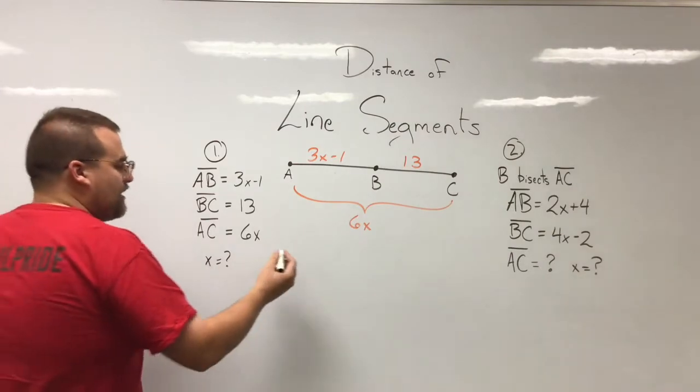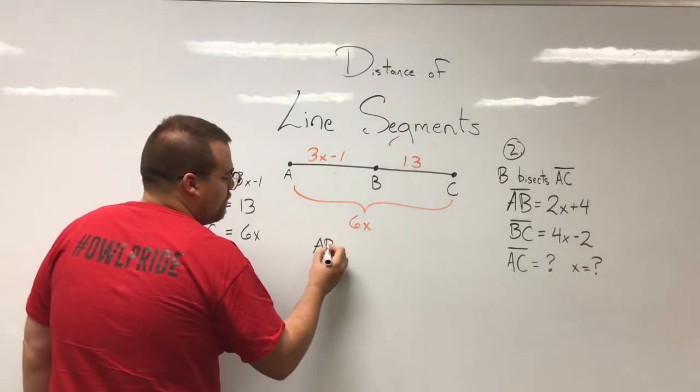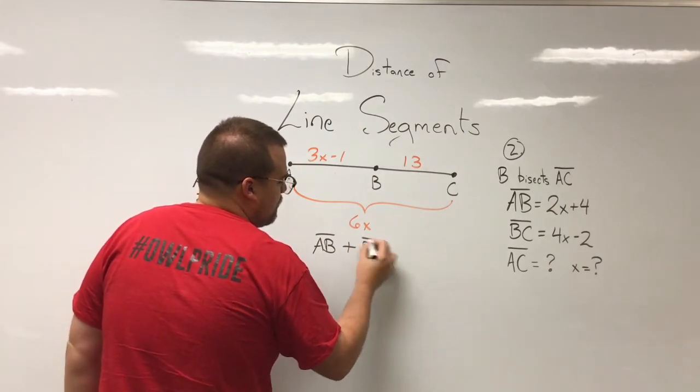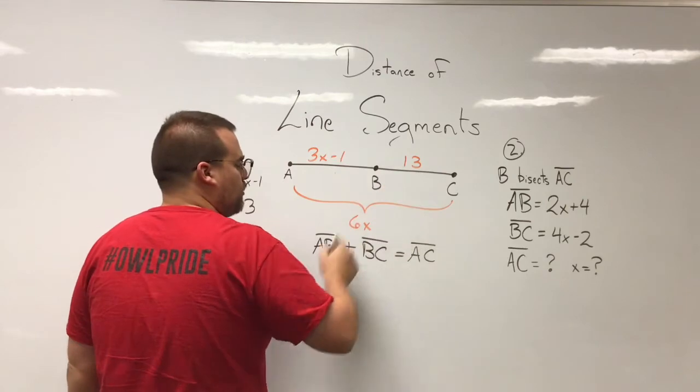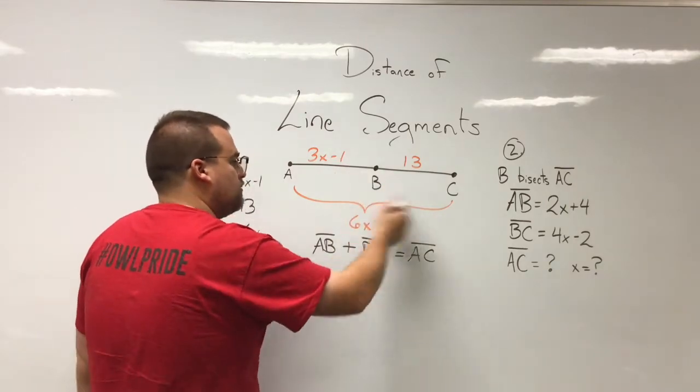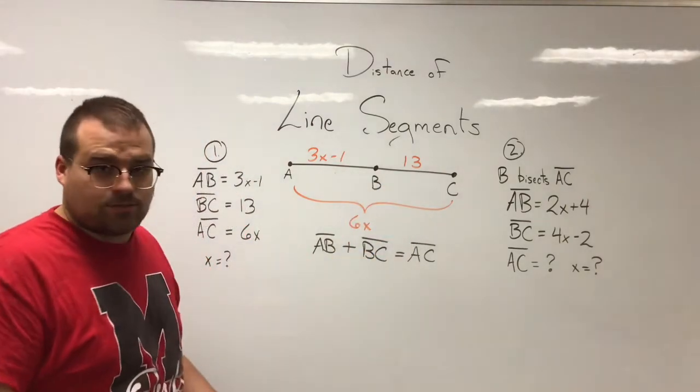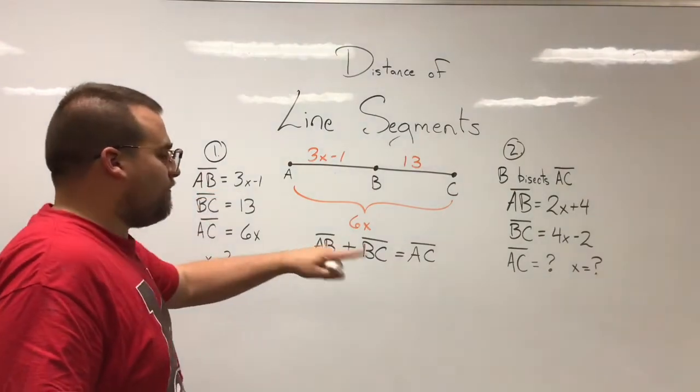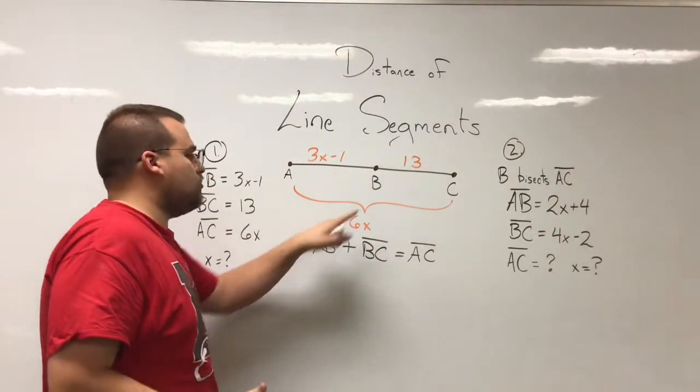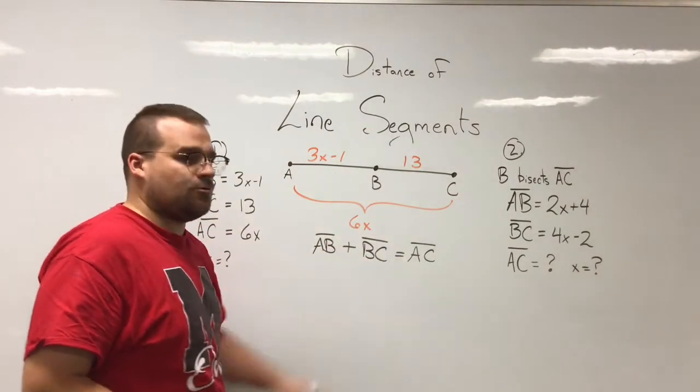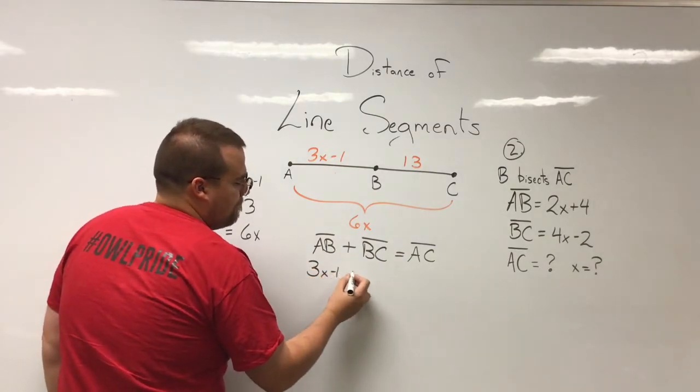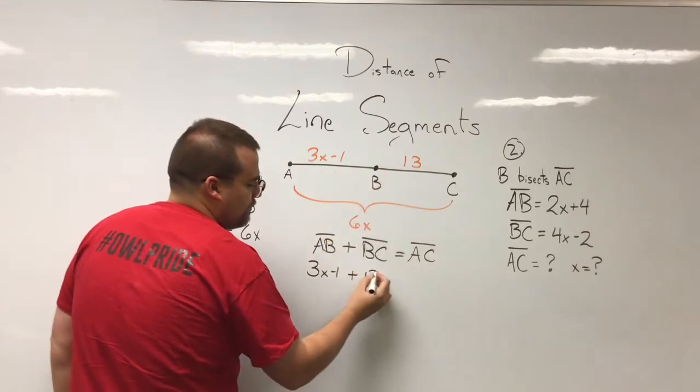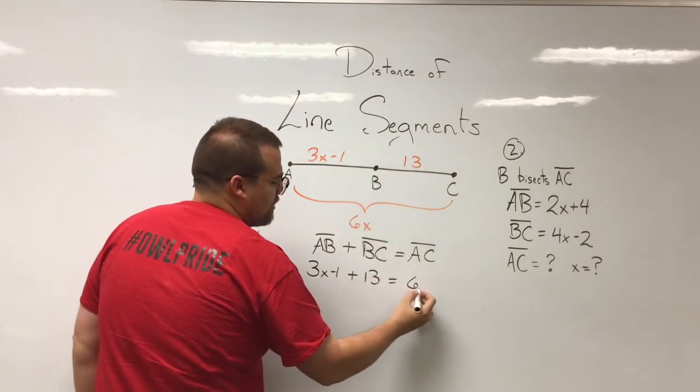So there's a pretty easy addition problem that I can set up. I can say that AB plus BC equals AC. My two smaller segments together make my larger segment. That makes sense. Now that I have my equation set up, I can substitute in what they are equal to. So AB is 3x minus 1, BC is 13, and AC is 6x.